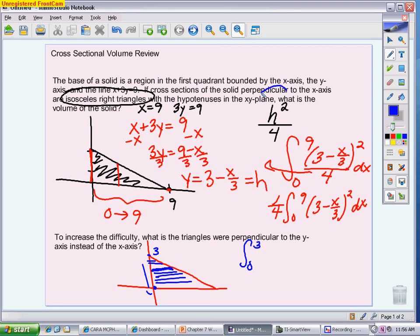I also have to represent the height, because the formula doesn't change. Isosceles right triangles are always going to use the same formula when it comes to integration. But I need to write the height differently. So now my height, if I go back to my original equation x plus 3y equals 9, I need to have it solved for x. And actually, this is a little easier. x is just 9 minus 3y.